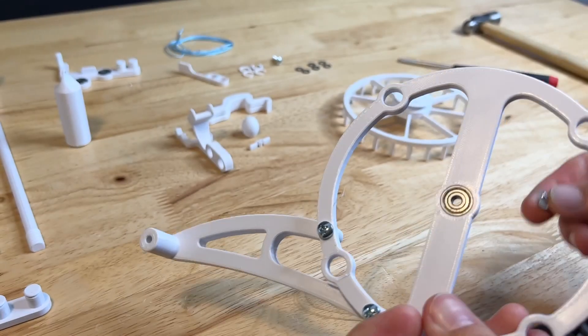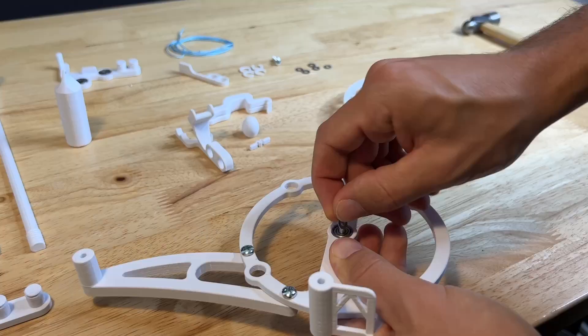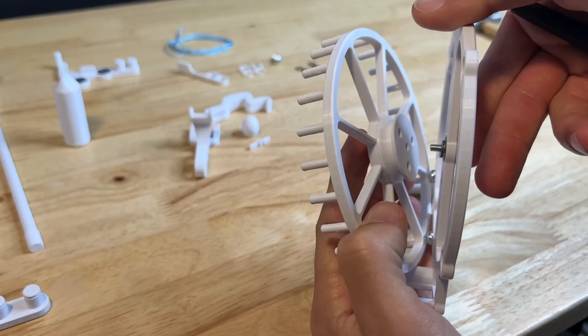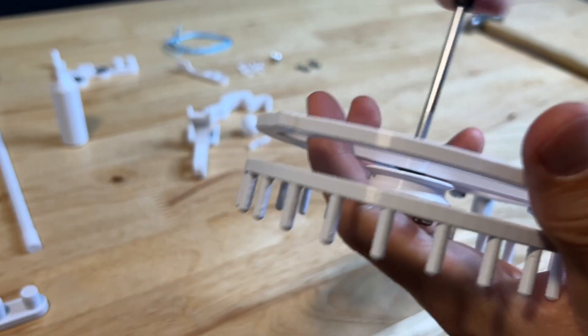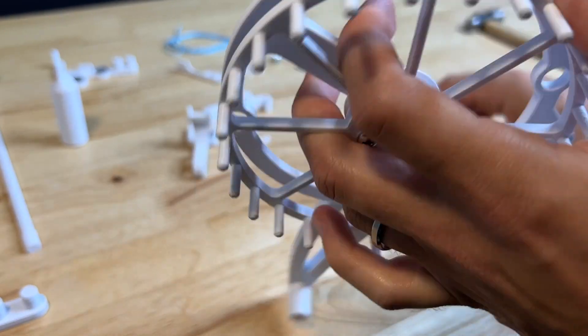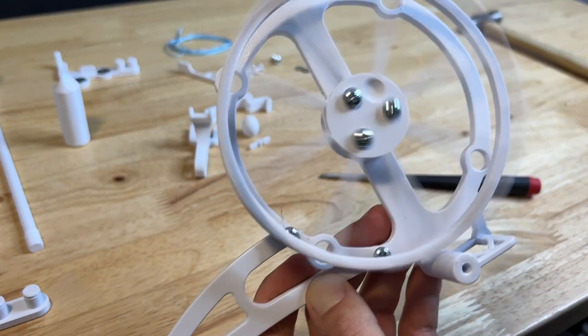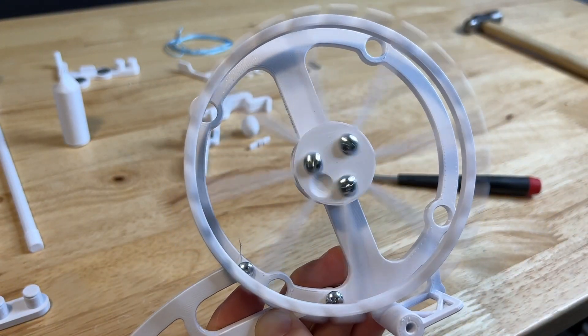Next, grab an M4 by 12 millimeter screw that goes in through the back of the base followed by two washers and then that screws into the hole in the center of the spool. Once it's all the way tightened, give it a spin to make sure that it's spinning freely. Looks good.